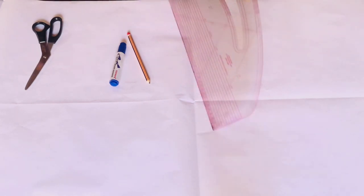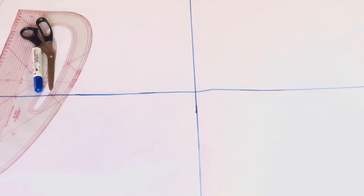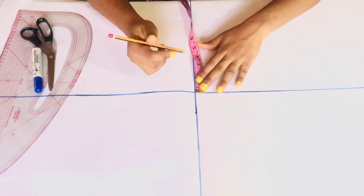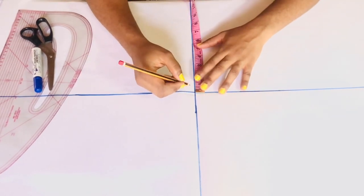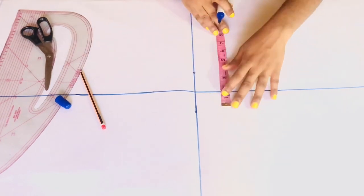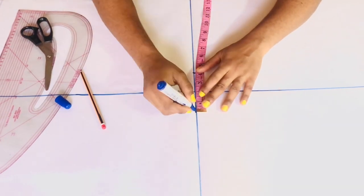Now after I've opened up my paper, I'm going to use my pattern master to go ahead and draw my lines. You can see that I've drawn my horizontal and vertical lines. On the midpoint of that line, I'll be taking two inches just so that